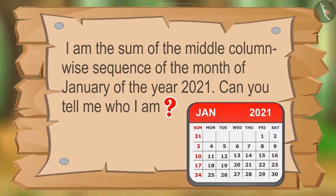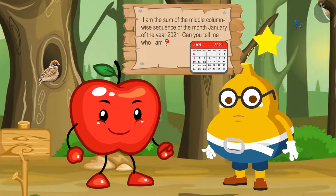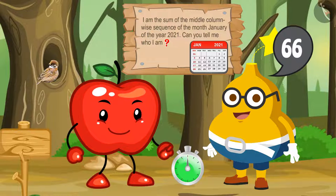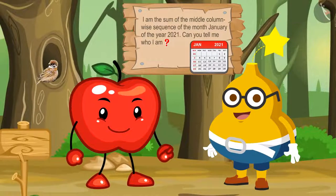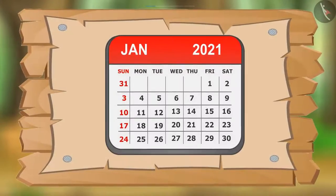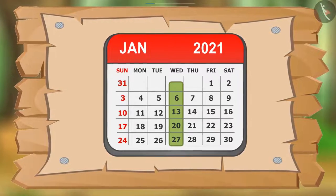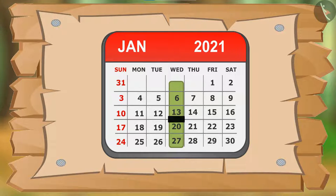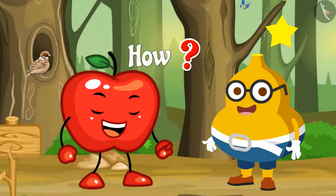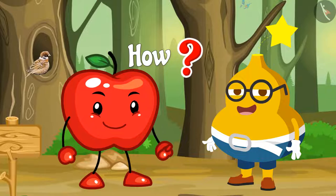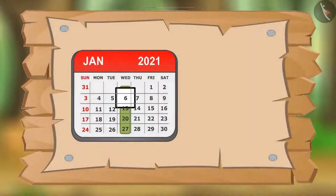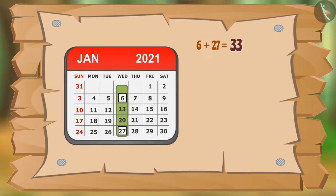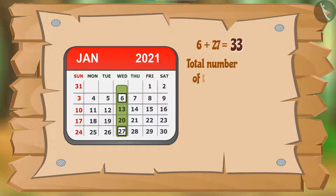Let's see what happens next. Fruity starts thinking and within one minute says: 66. Appie says: Correct! But this is the middle column-wise sequence of the month January in the year 2021. In this sequence there is no middle term — so how did you calculate its sum so quickly? Fruity says: Here I added the first and last numbers of the sequence and got 33. The total number of terms is 4.